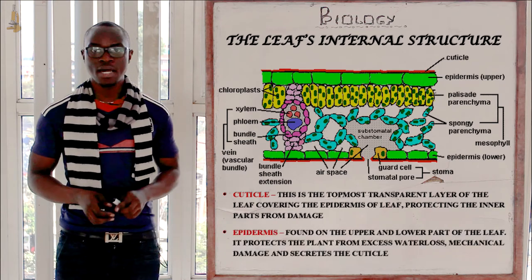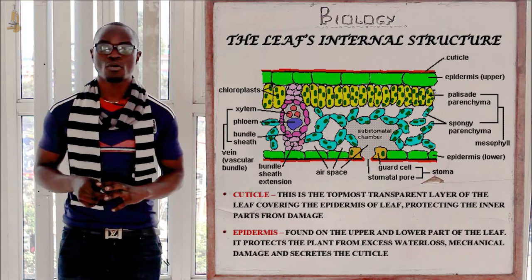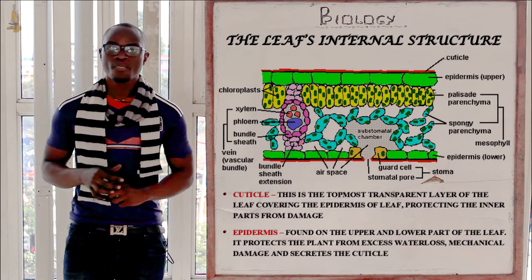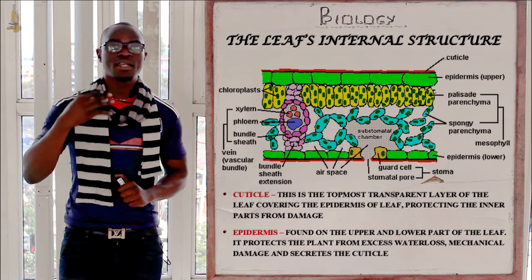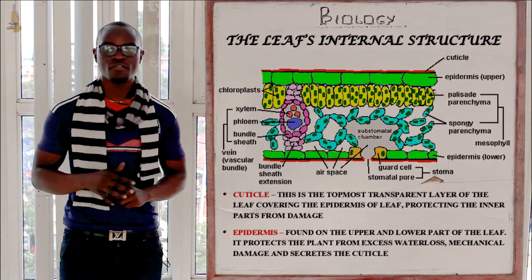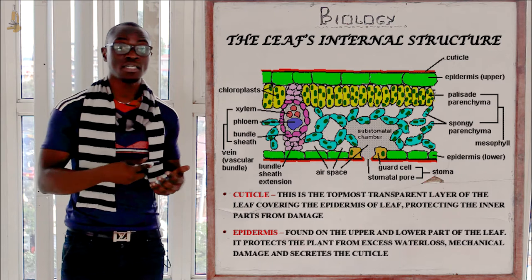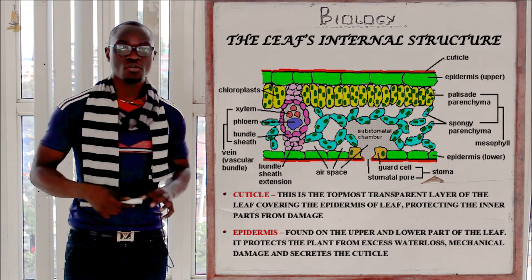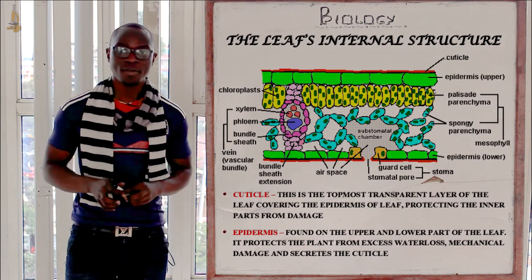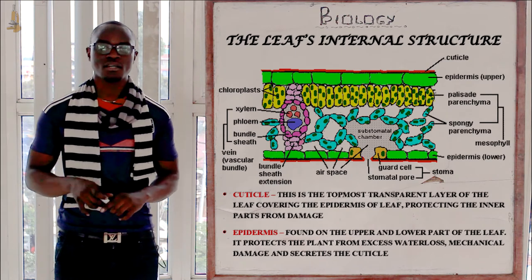After the cuticle we have the epidermis, which is mainly one cell thick and comprises of many dead cells. We have an epidermis on the upper parts and the lower parts of the leaf. The epidermis is responsible for secreting the cuticle, and we must know that it does not have a chloroplast but it might have guard cells.